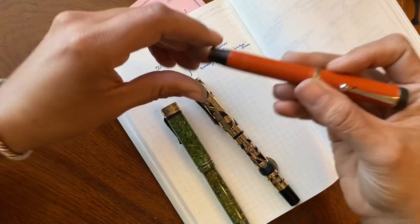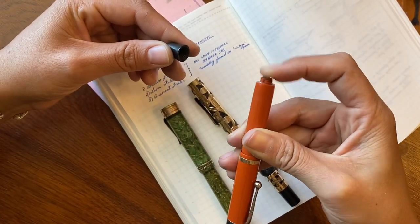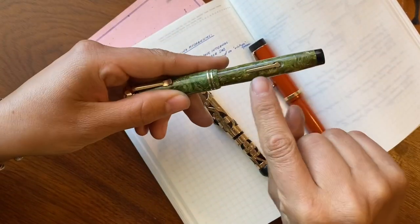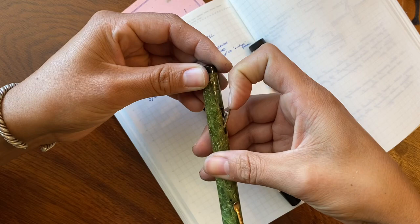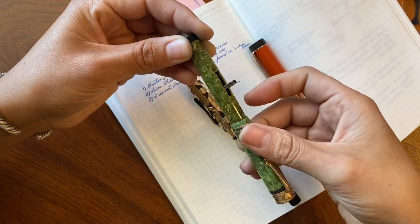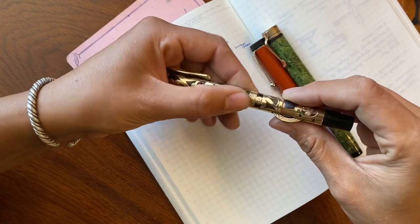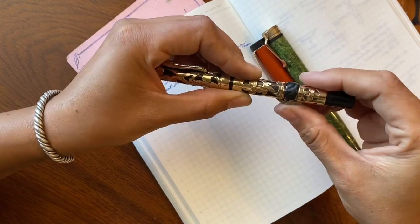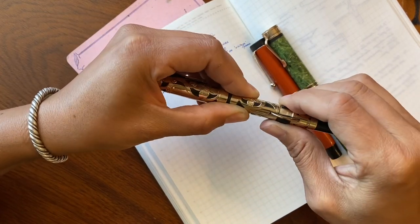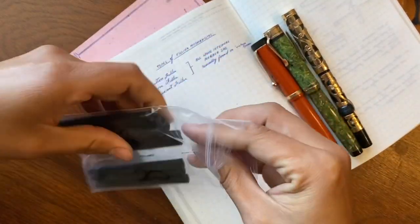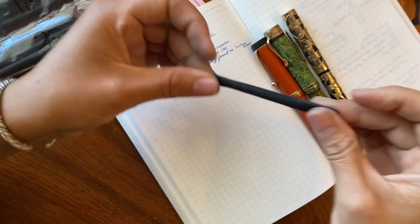Here we have a blind cap with a button filler. We have a lever filler, and this actually depresses a pressure bar on the inside which then in turn depresses the rubber sac. And then we have a crescent filler, which is Mark Twain's favorite and also the first successful self-filling mechanism for a fountain pen. And here's what a sac looks like.